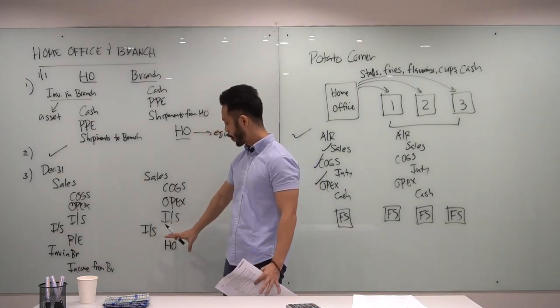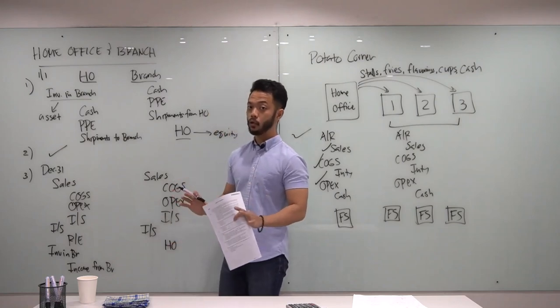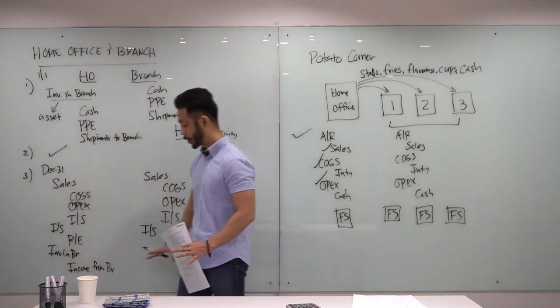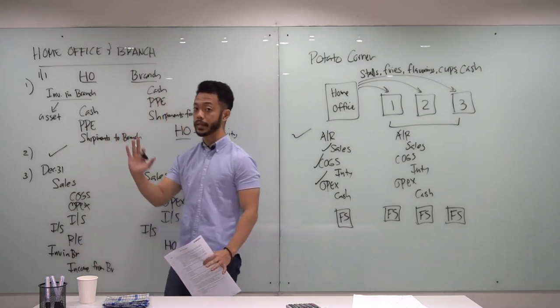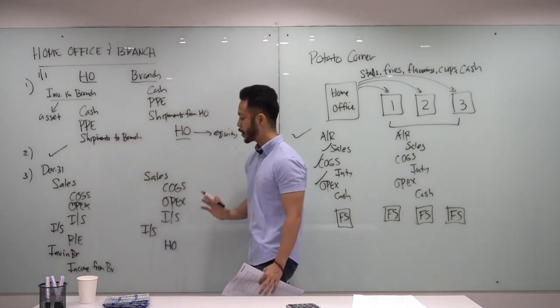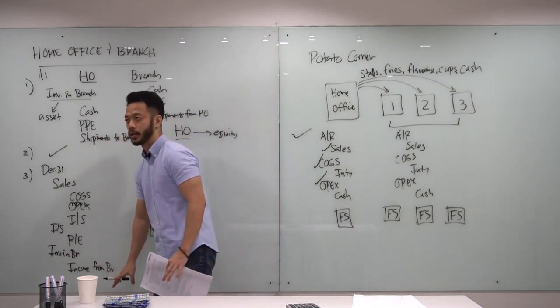Every time the Home Office account moves, the 'Investment in Branch' account should also move, because they are reciprocal accounts — so at the end of the year, they should be equal. If the branch's equity (Home Office account) increases, the home office should debit 'Investment in Branch' and credit 'Income from Branch.' This reflects that the branch earned income, increasing the asset on the home office side.